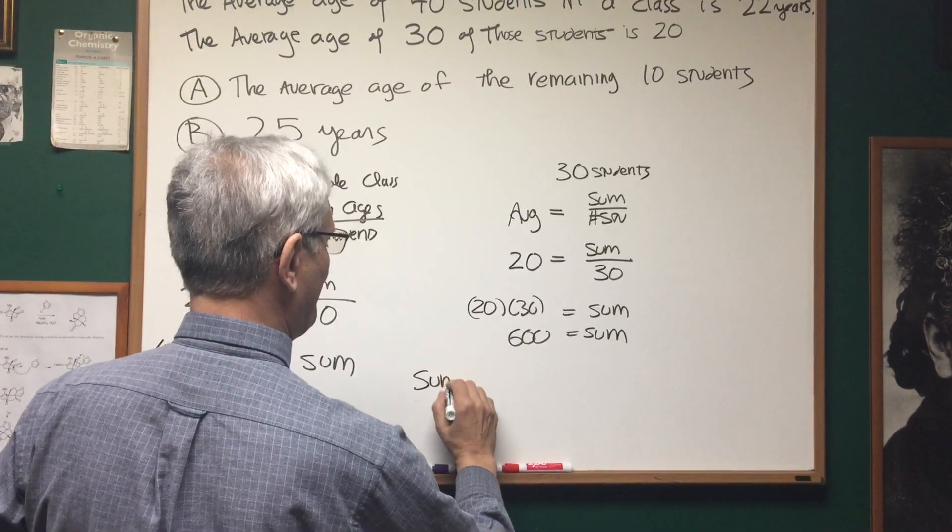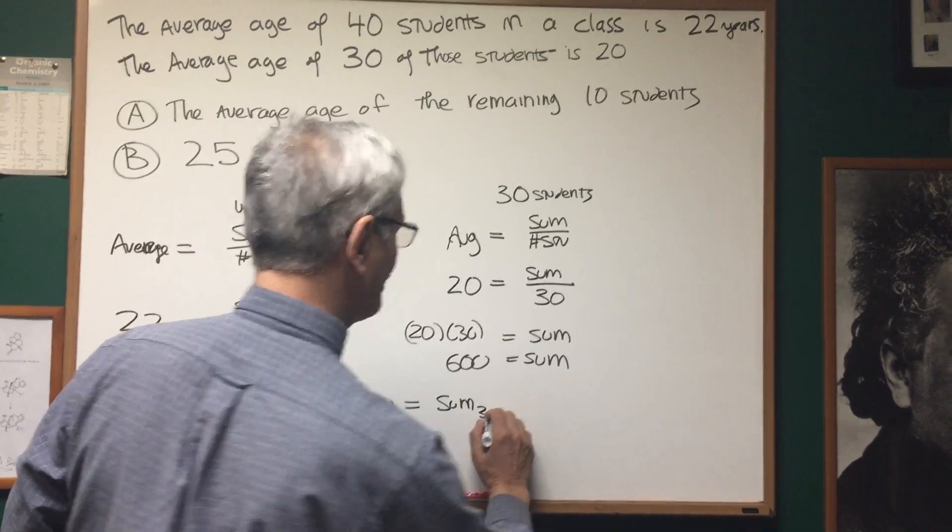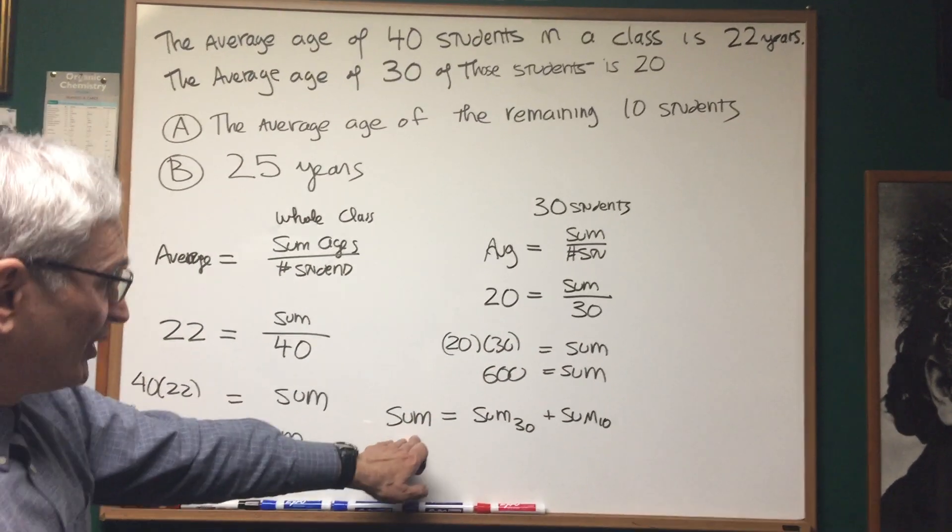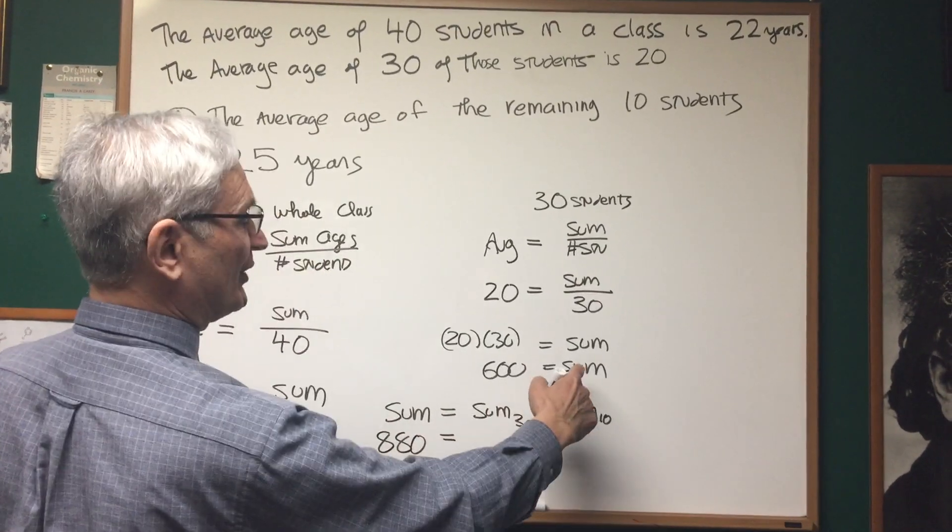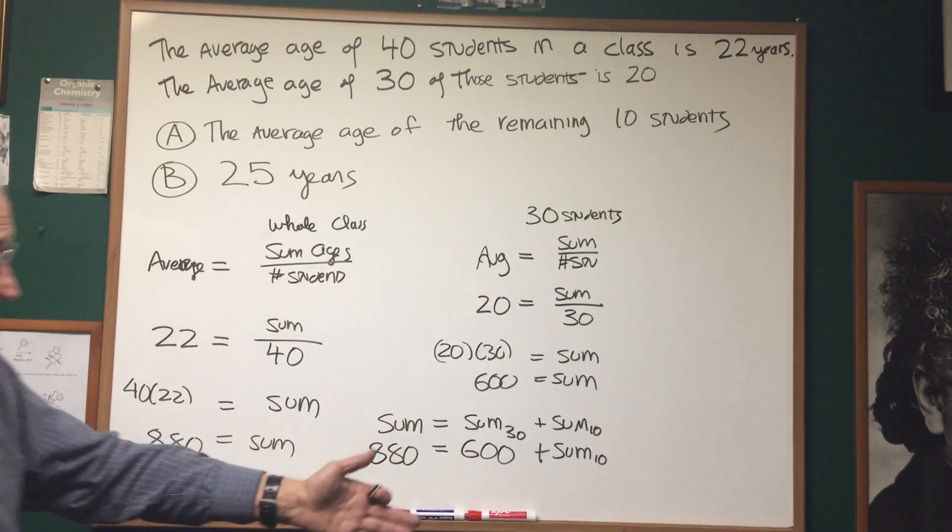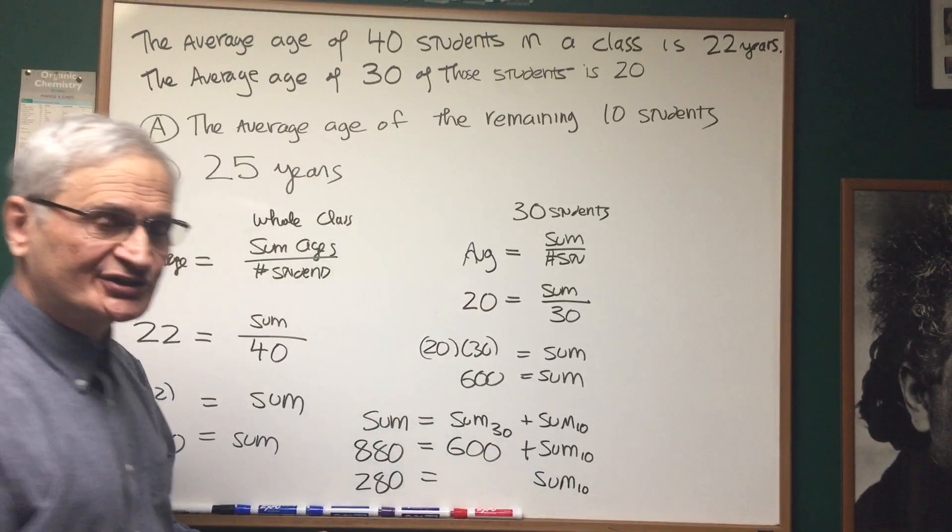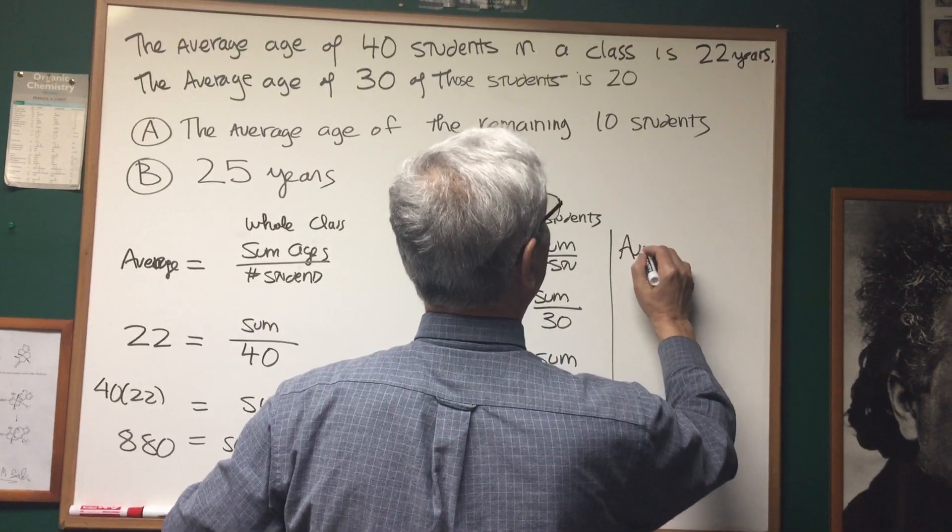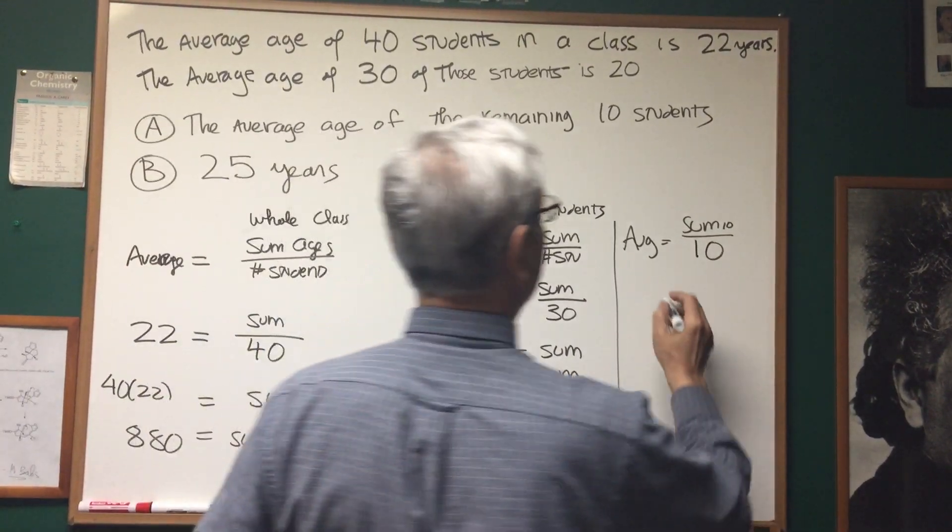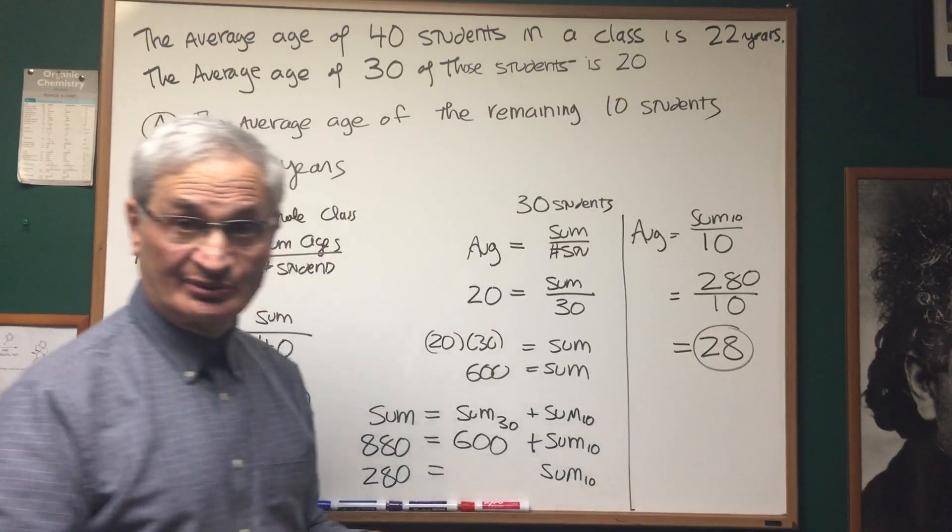That means that the sum of the ages of the total number of students in the class is equal to the sum of the ages of those 30 students plus the sum of the ages of those 10 remaining students. We know that the sum of the ages of everyone in the class is 880. We know that the sum of the 30 students is 600. Therefore we can figure out what the sum of the remaining 10 students is. Let's subtract 600 from both sides and we get 280. The average is the sum of the ages of those 10 students divided by the number of students, which is 10. Therefore the average age is 280 divided by 10. The average age of those remaining 10 students is 28.